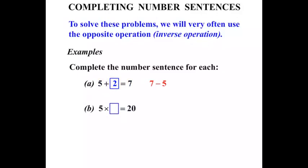The next one. 5 times something equals 20. Now again I know that you know the answer, but let's see this inverse operation. We finish off with a 20, so working backwards we start with 20.